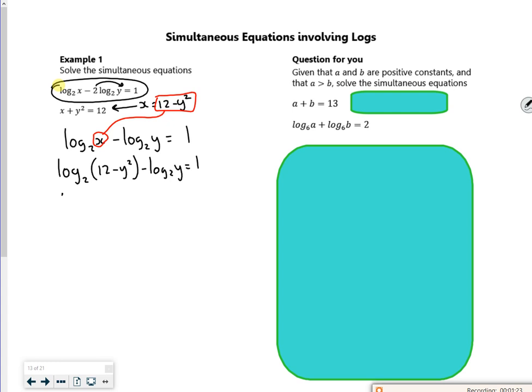So I combine these as a simple log, so minus means divide, I've got 12 minus y squared all over, that should be a square there, I took my 2 up there, over y squared is equal to 1.